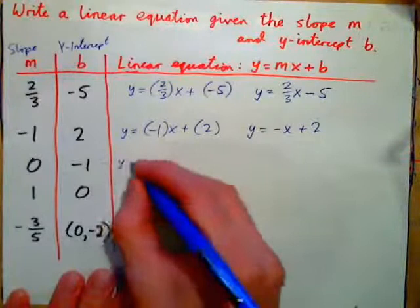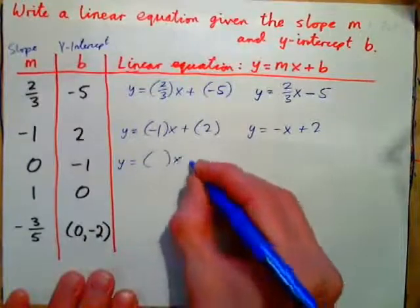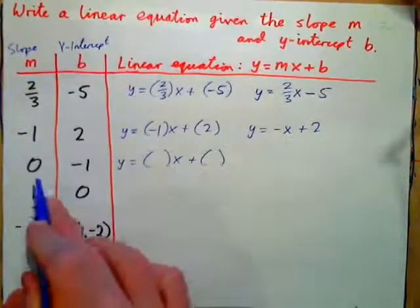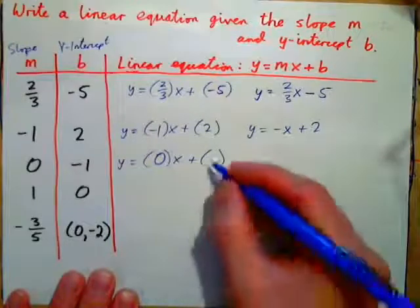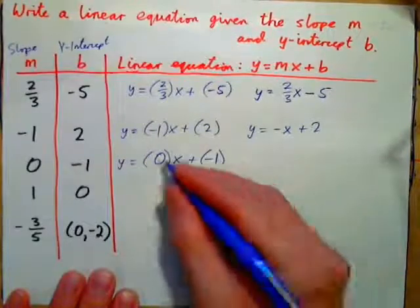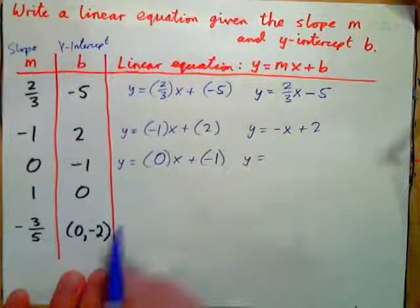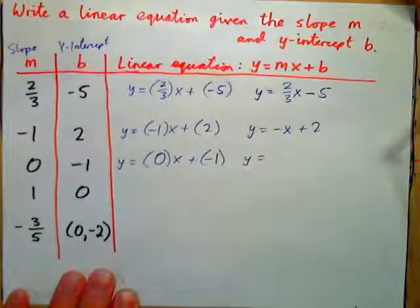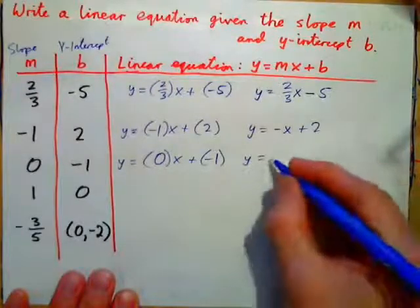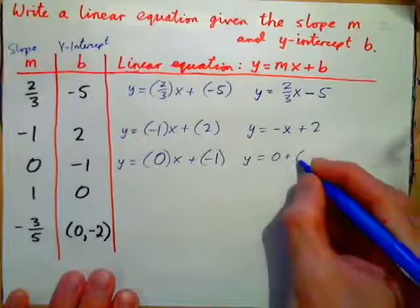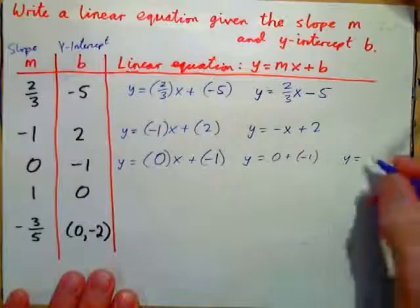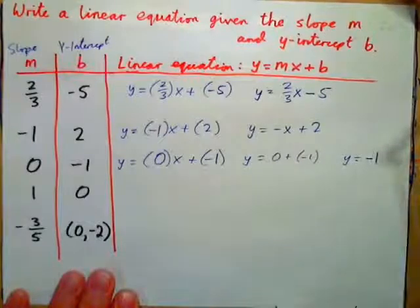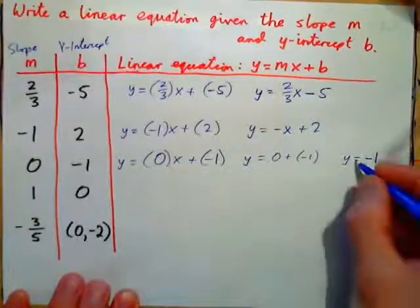Now do this one. Plug in the value for the slope and then for the y-intercept. The slope always goes here, and the y-intercept goes here. If we simplify that equation, what is 0 times x? It's 0. So we have y equals 0 plus negative 1. What's 0 plus negative 1? Negative 1. So y equals negative 1 is the simplest form of the equation.